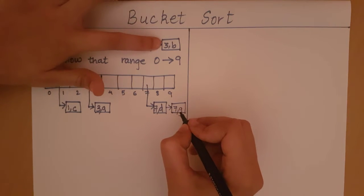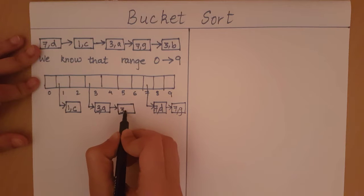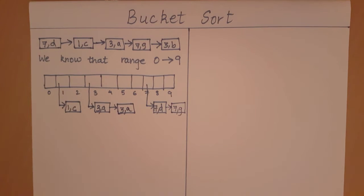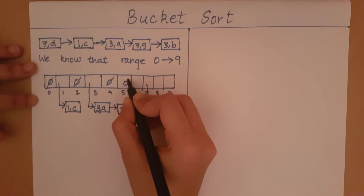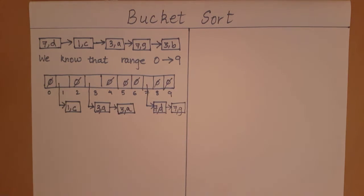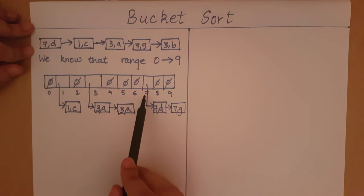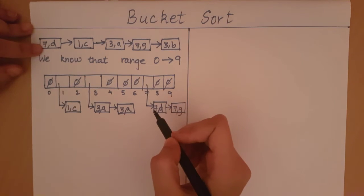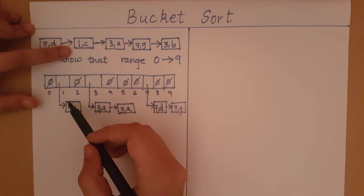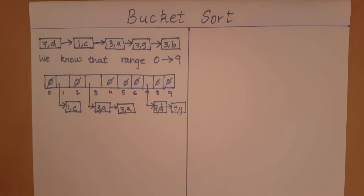Then I will go to 3b, go to index 3, and add it to the end of the linked list starting at index 3. As you can see, when we create an array of range 0 to 9, we create an array of linked lists. In the beginning, all of them are going to equal null. We will traverse the initial list and insert each node to the index of the numeric value stored in the tuple. So if it's 7d, we store it at index 7; if it is 1c, we start the linked list at index 1; if it's 3a, we add it to the linked list at index 3. This is how the first phase of bucket sort works.